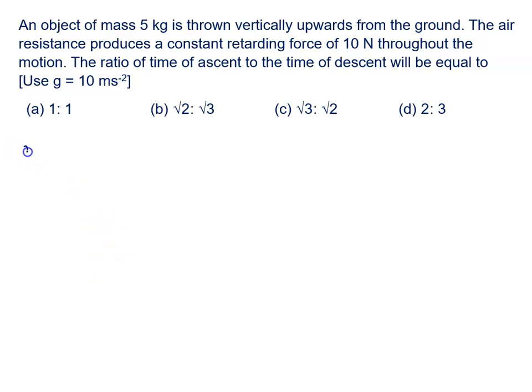An object of mass 5 kilogram is thrown vertically upward from the ground. The air resistance produces a constant retarding force of 10 Newton throughout the motion. The ratio of the time of ascent to time of descent will be equal to. Use g = 10 meter per second square.